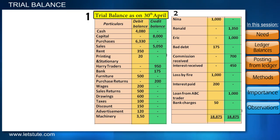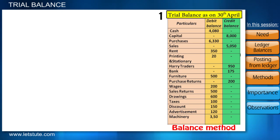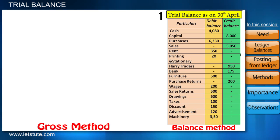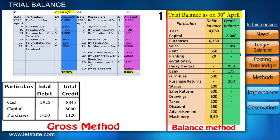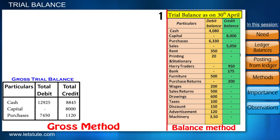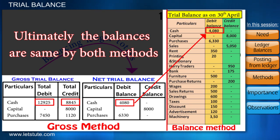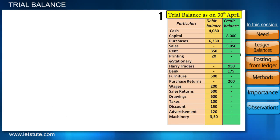The method we just used is called the balance method of preparing a trial balance, because we are stating the debit balance or credit balance of each account. From an academic perspective, there is another method called the gross method, wherein the totals of the debit and credit sides are taken directly from ledgers to prepare a gross trial balance, and then the amounts on the two sides of each account are subtracted to find its net balance. But the balance method is more commonly used.